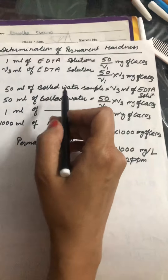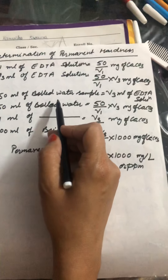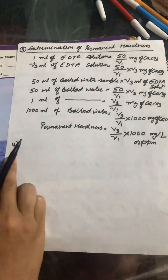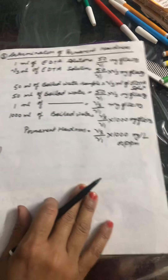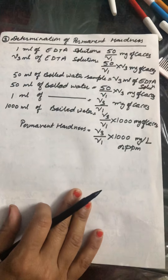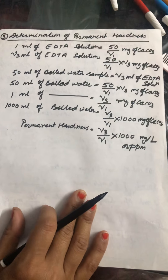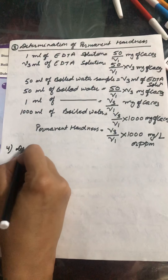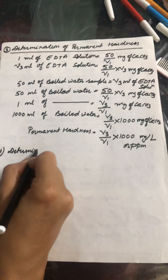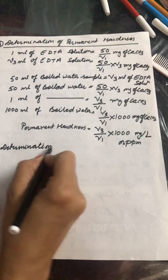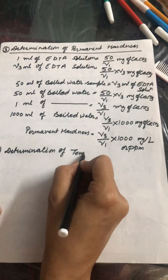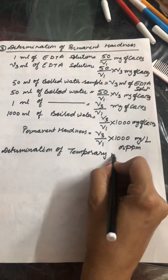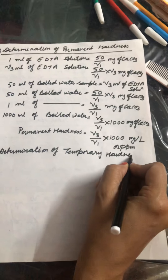In the third titration it was permanent hardness, where titration was between boiled water sample and EDTA solution. Now the fourth point has no titration, but on the basis of the above calculations we determine the next point, which is determination of temporary hardness.